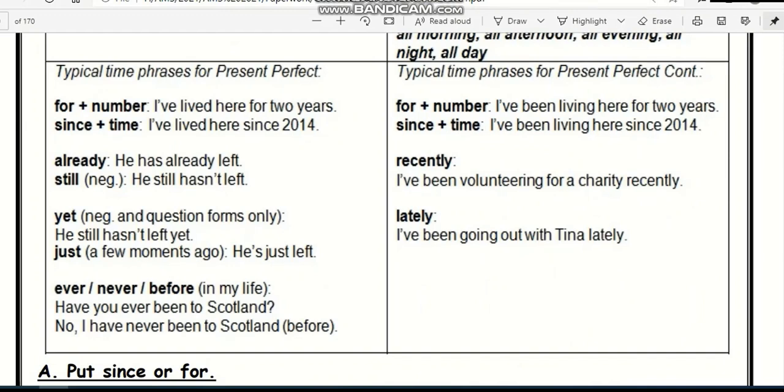Then we have ever, never, before in my life. Say that I did this or I didn't do it in my life before. For example, have you ever been to Scotland? No, I have never been to Scotland before.